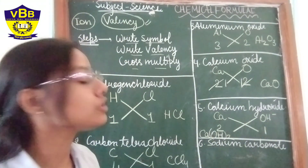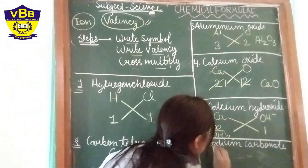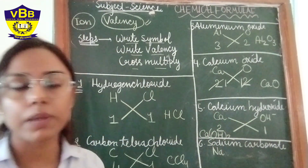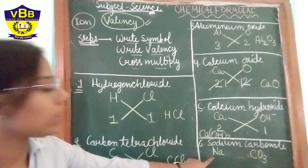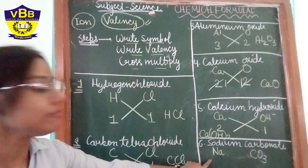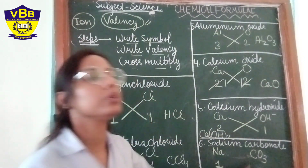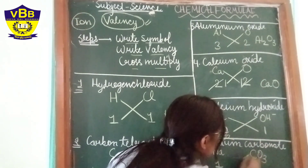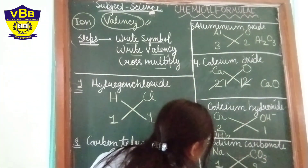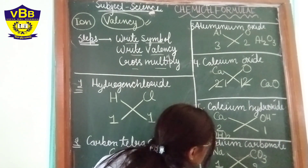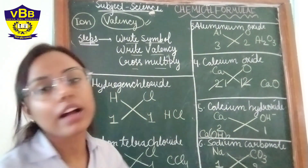Next is sodium carbonate. The symbol of sodium is Na and the symbol of carbonate is CO3. The valency of sodium is 1 and the valency of carbonate is 2. When we cross multiply, we get Na2CO3. This is your sodium carbonate.